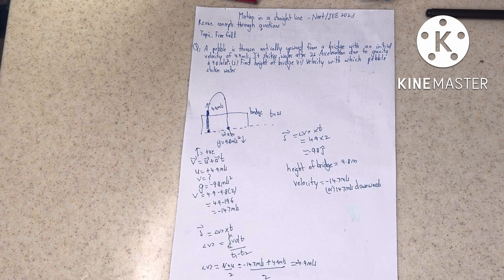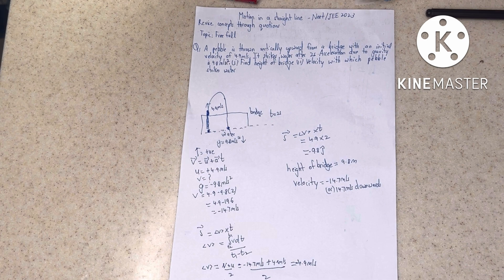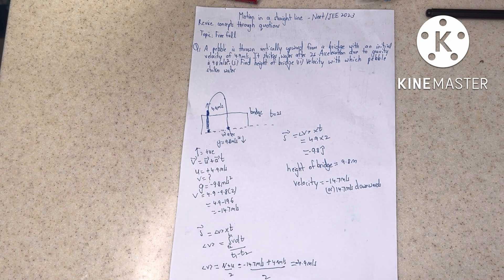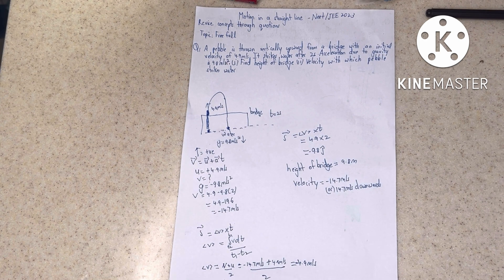What does it mean to take a direction as positive? You can take downwards as positive or upwards as positive — you should get the same answer. It is basically giving direction through vector equations, since the equations of motion are all vector equations: v = u + at, s = ut + ½at², and v² = u² + 2a·s.